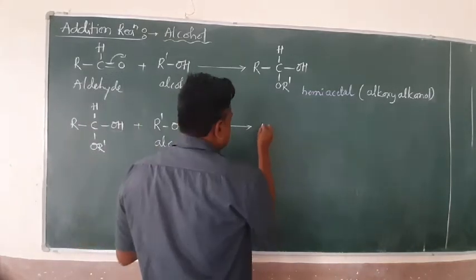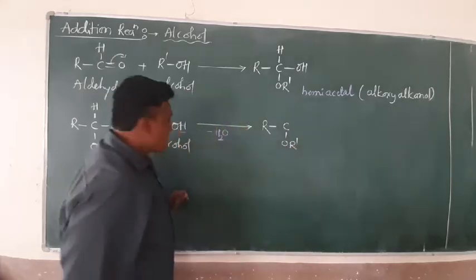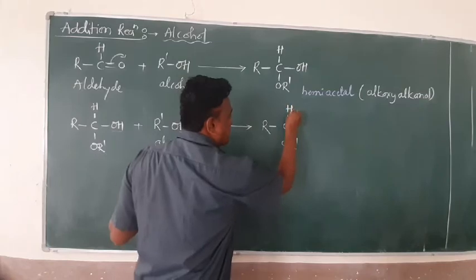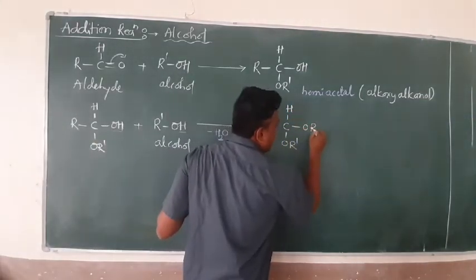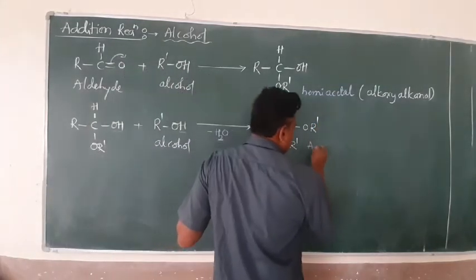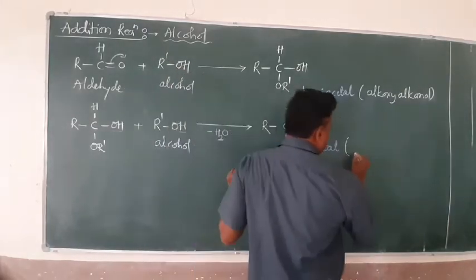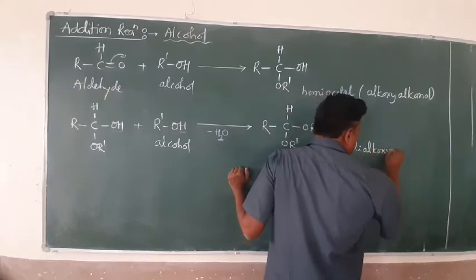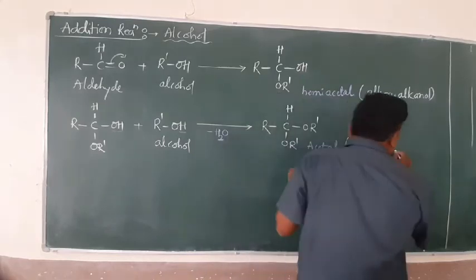What remains of R as it is. See, already it is OR'. This H is retained. This is your H. And this position, this is your OR. This is once again OR dash. Name of this compound is known as acetal. What about the name of that? The IUPAC name is dialkoxy. Dialkoxy - this is not alcohol. This is alkane.